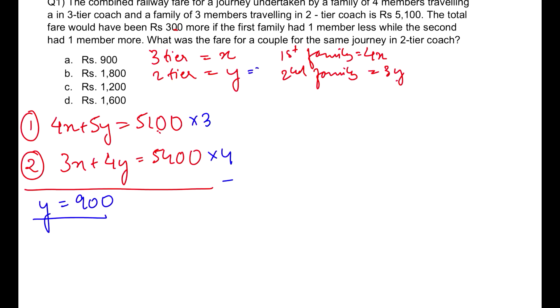If you do this subtraction, you will get the value of Y equals 900. Y was the value of the two-tier ticket. So we already got the value of Y. But always keep this in mind that you are in an examination where you don't have to just solve the question but also save time for yourself. Read the last line of the question. That is asking you the fare of a couple in a two-tier coach. Couple means two people and two-tier coach means Y. So you will just multiply this with 2 and get the answer as 1800, which is option B.